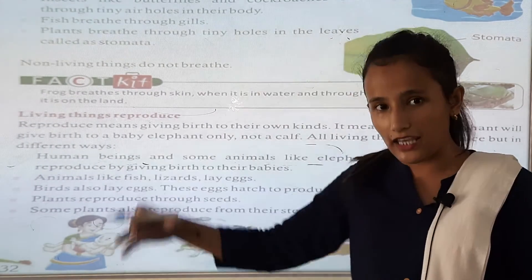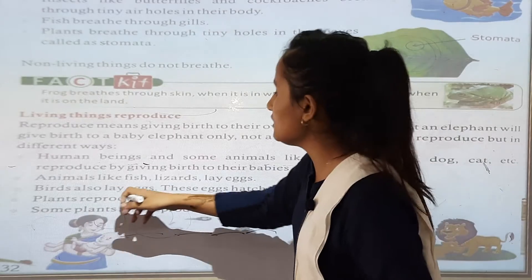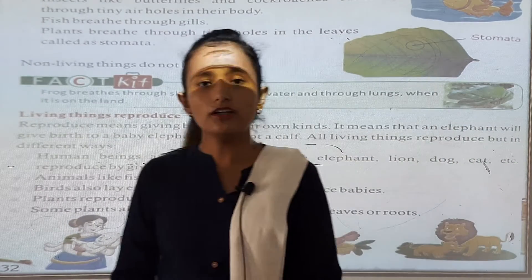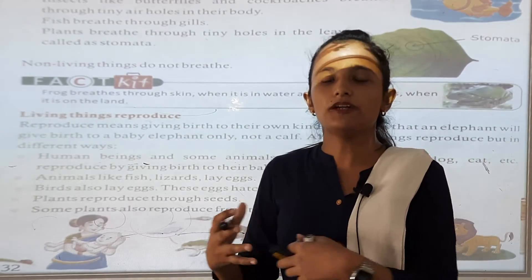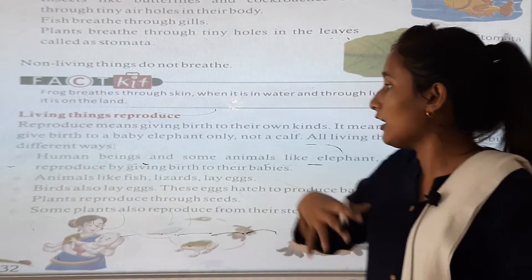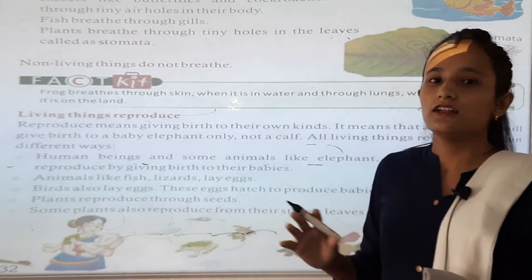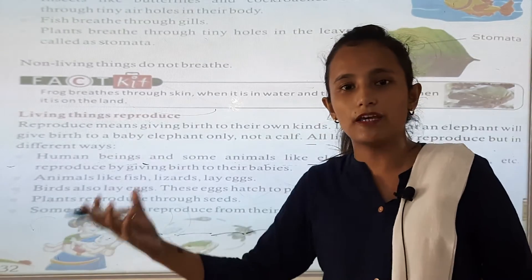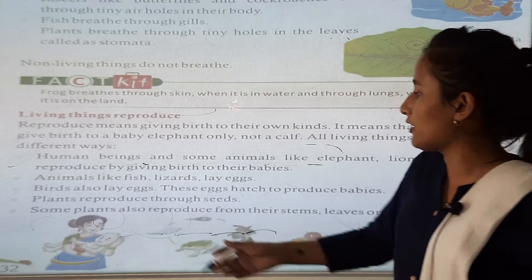Birds also lay eggs — these eggs hatch to produce babies. Human beings and animals like dogs reproduce through birth — our baby comes out through our body. But birds and snakes cannot give birth directly; they give eggs, and from those eggs the babies come out. Plants reproduce through seeds.